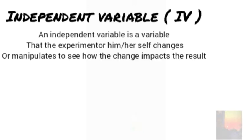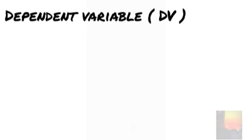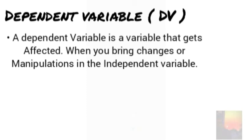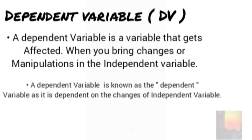An independent variable, also known as the IV, is a variable that the experimenter changes or manipulates to see how it impacts the result of an experiment. The second variable, which is DV or dependent variable, is a variable that gets affected when you bring changes in the IV. A dependent variable is dependent on the changes in the IV.